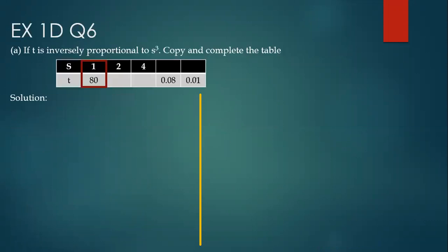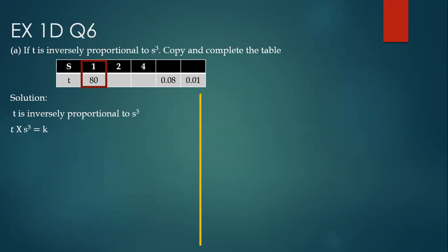If t is inversely proportional to the cube of s, copy and complete the table. There are some values missing. What we know is we have s equal to 1 and t equal to some value. We are going to use this box because it has both values. Since t is inversely proportional to s-cubed, that means t times s-cubed equals k. Replace t with that value and s with 1, so k equals that value of t.